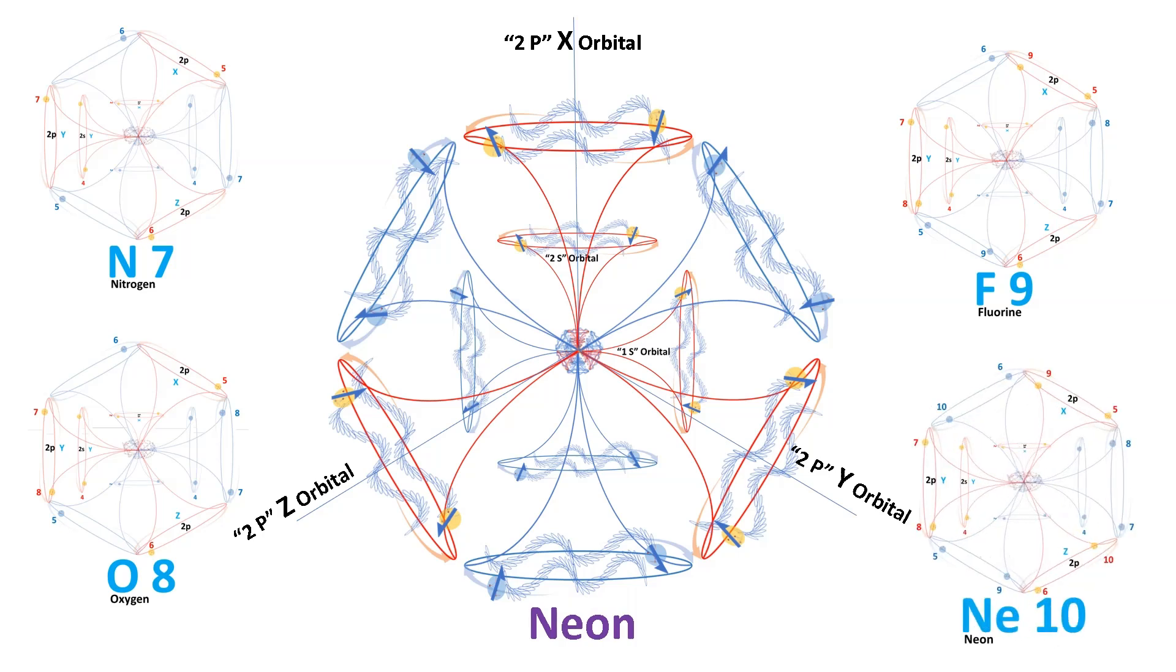With all orbitals now fully occupied, we reach a state where the 1s and 2s orbitals each hold two electrons and two positrons. Meanwhile, the 2p orbitals house a total of six electrons in their red path and six positrons in their blue trajectory.